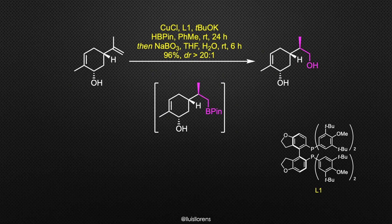The synthesis begins with a copper-catalyzed asymmetric hydroboration of the alcohol with pinacolborane, followed by oxidation of the obtained pinacolboronate intermediate, to give the desired diol in 96% yield and excellent diastereoselectivity and chemoselectivity.